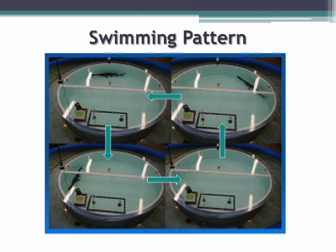This is a picture of the swimming pattern of paddlefish. You can see it swims around the outside of the tank in a circular pattern, and this is true for every single fish. Occasionally they'll swim across the middle, but once they hit the other wall they follow it and keep going in a circle, showing that they are continuous swimmers.